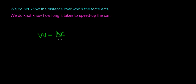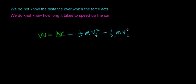That's why the work kinetic energy theorem is so useful — it says that the work required to speed up or slow down an object only depends on the change in the object's kinetic energy. The change in kinetic energy can be written as one-half the mass of the car times the final velocity squared minus one-half the mass times the initial velocity squared. In this case, the initial velocity is zero, so that entire term becomes zero, and we can rewrite the change in kinetic energy as one-half the mass of the car times the final velocity squared.